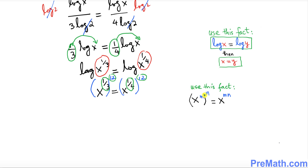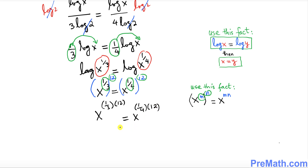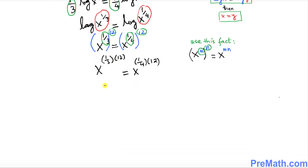Using the rule that x to the power m raised to the power n means the exponents multiply, we get x to the power of 1 over 3 times 12, equal to x to the power of 1 over 4 times 12. So 1 over 3 times 12 gives x to the power 4, and 1 over 4 times 12 gives x to the power 3.